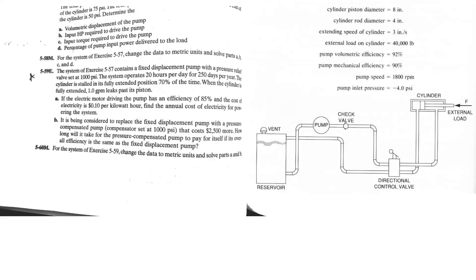Another application problem for a pump. This is from the textbook by Anthony Esposito, 7th edition, Fluid Power with Applications. We are solving problem number 5-59. This problem is related to the one we solved before, which is 5-57. This one is asking for calculating the yearly cost and redesigning the system. The system runs 20 hours per day and for 250 days per year.